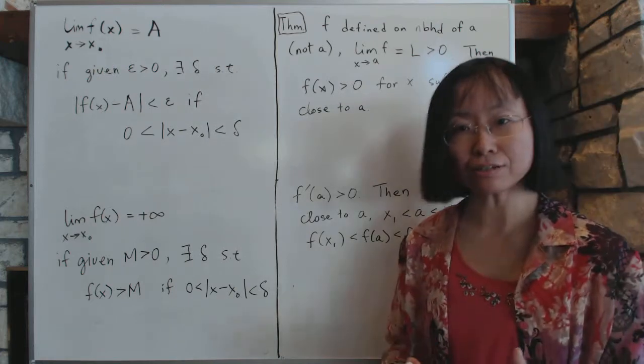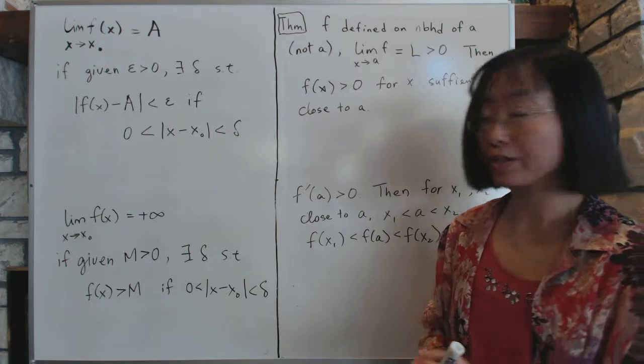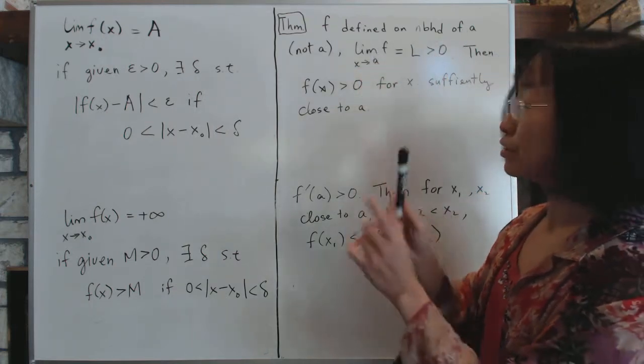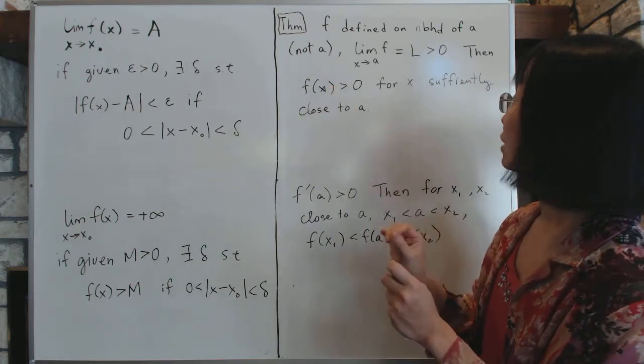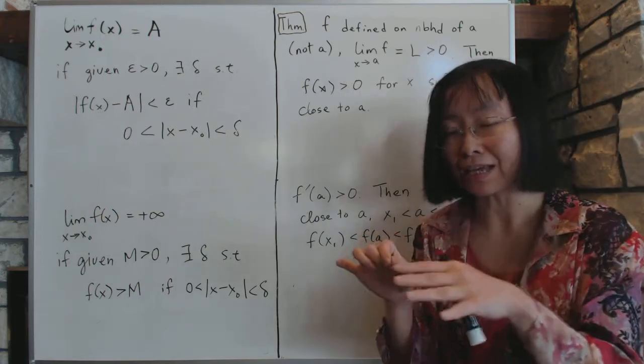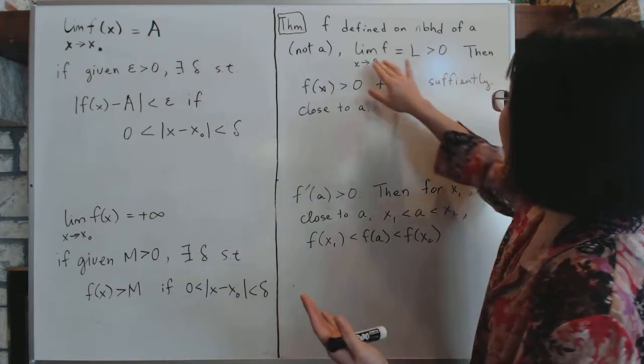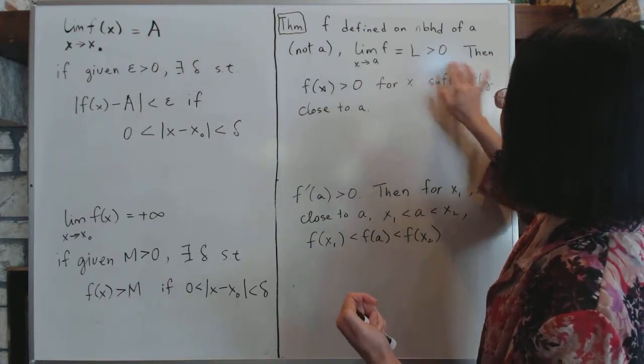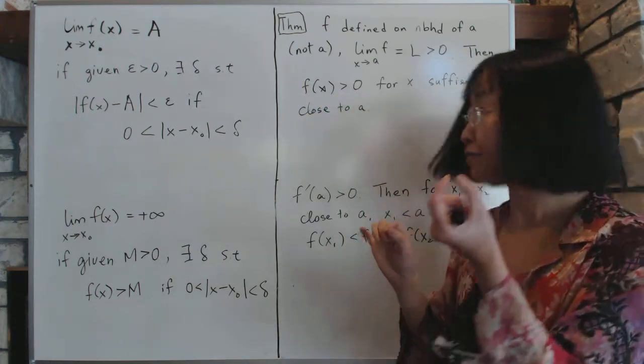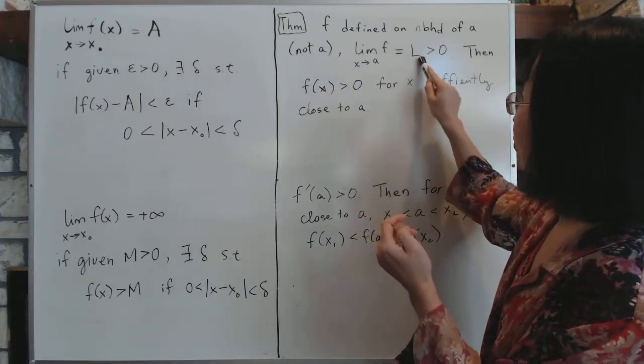Let's look at some of the theorems on limits. The theorems I'm going to quote are all very obvious. For example, let's say f is defined around the neighborhood of a, but not necessarily at a itself. And the limit of f exists at a. In other words, as you approach a, f approaches some kind of value. But f might not even be defined at a. We don't care about that necessarily. However, what I'm trying to prove is for close enough neighborhood of a, f(x) has to be bigger than zero if the limit itself is bigger than zero.